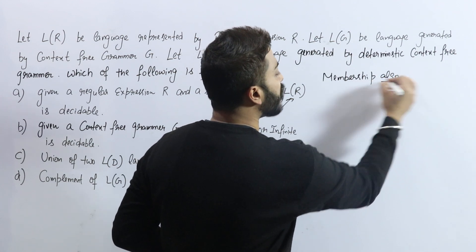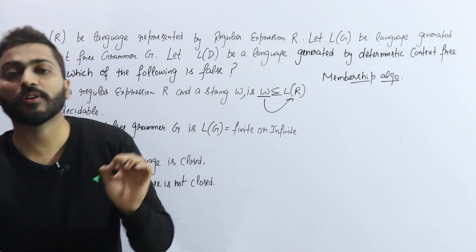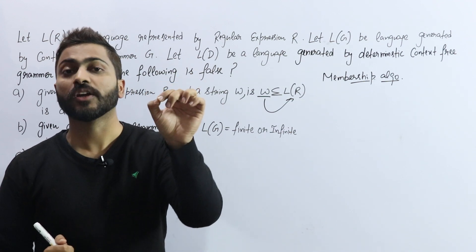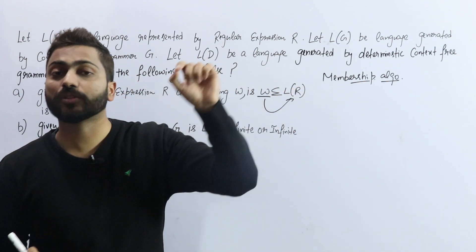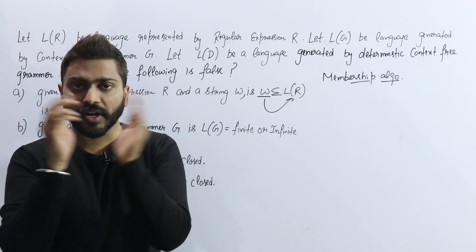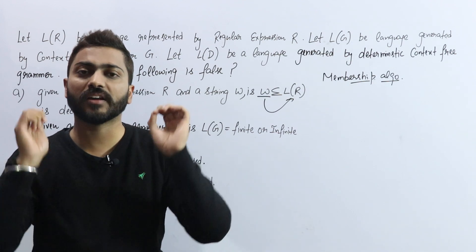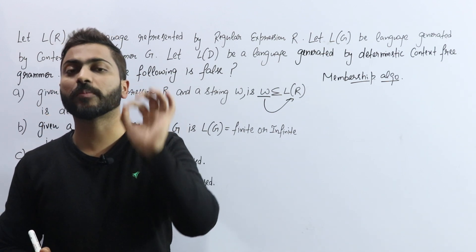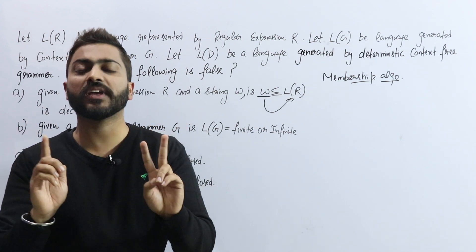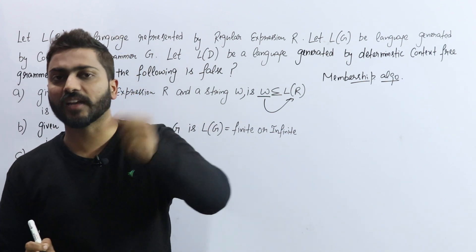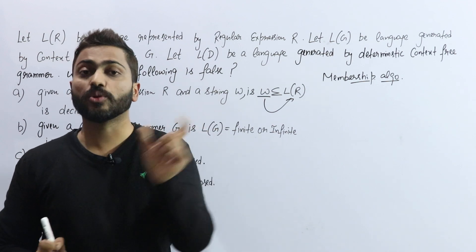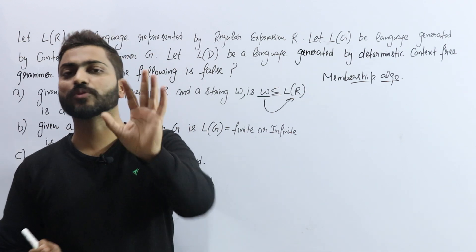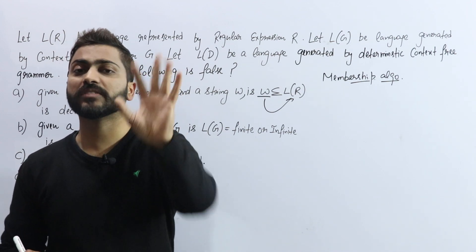I want to tell you guys, membership algorithm is a topic that comes under decidable and undecidable, and this decidable-undecidable topic is one of the most important topics in TOC. Along with that, the other important topic is closure properties. These are two topics on which you will get a new question every year — you cannot neglect them, they are mandatory. It is also very easy because there are tables for both, and based on those tables you just need to find out whether something is decidable or closed.